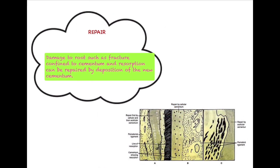Moving forward to the next function of cementum: repair. Whenever there is damage to the root of the tooth — for example, a fracture confined to the cementum — the tooth will try to repair itself by depositing new cementum so that the fracture can be repaired. With increasing age, root fractures become more common due to increased occlusal stress. Cementum repairs small amounts of wear and tear or fractures of the root. Initially, cellular and acellular cementum is formed, and later it is completely replaced by acellular cementum.